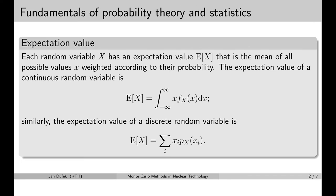Welcome back. In this mini lesson we are going to learn about several quantities from statistics: the expectation value or the mean value of a random variable, the variance of a random variable, and the covariance of two random variables. Let's start with the mean value, which is also called the expectation value of a random variable, and we are going to denote it by capital E.